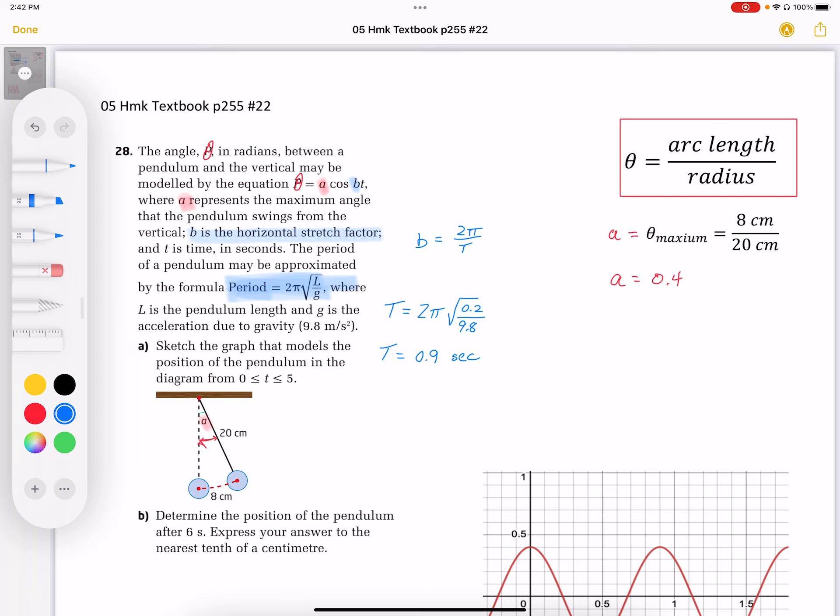So our period is 0.9 seconds. That means, then, that the B value that we're looking for is going to be 2 pi over 0.9. So there it is. There's my A, there's my B.